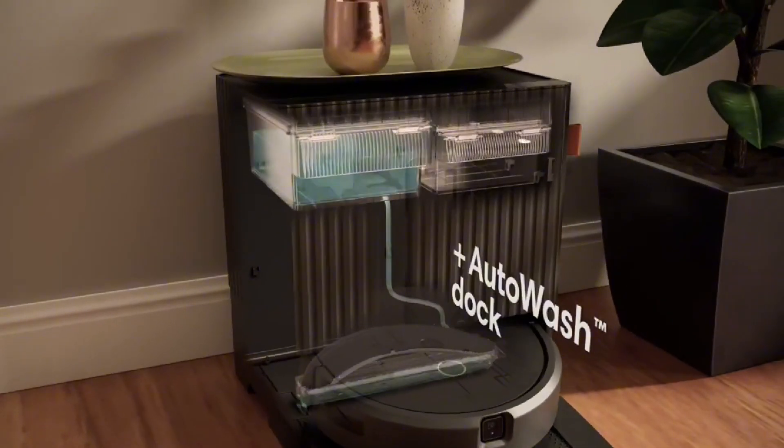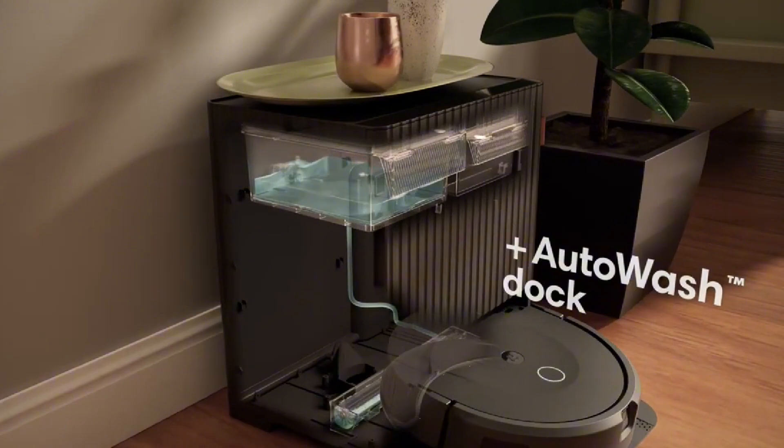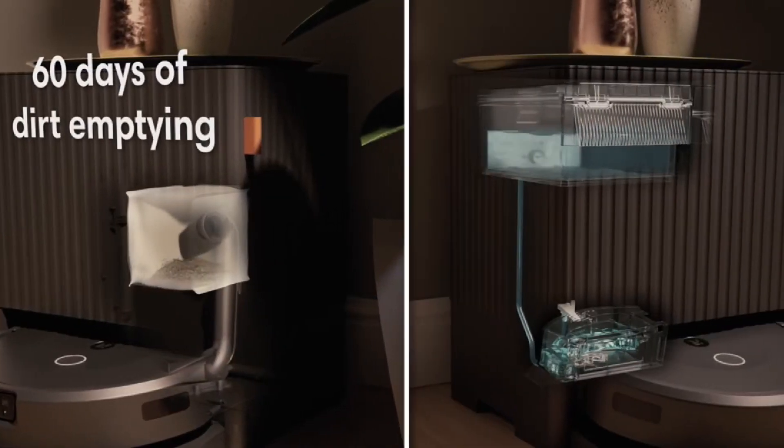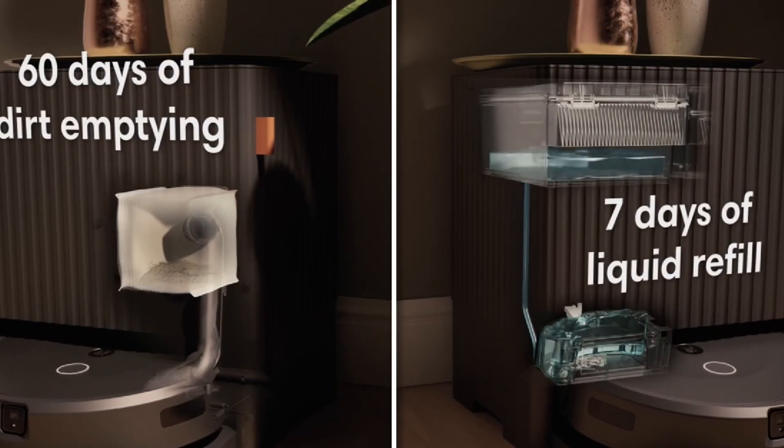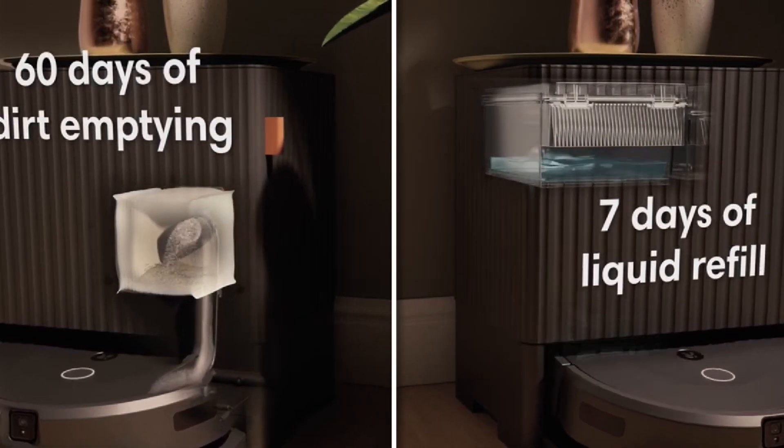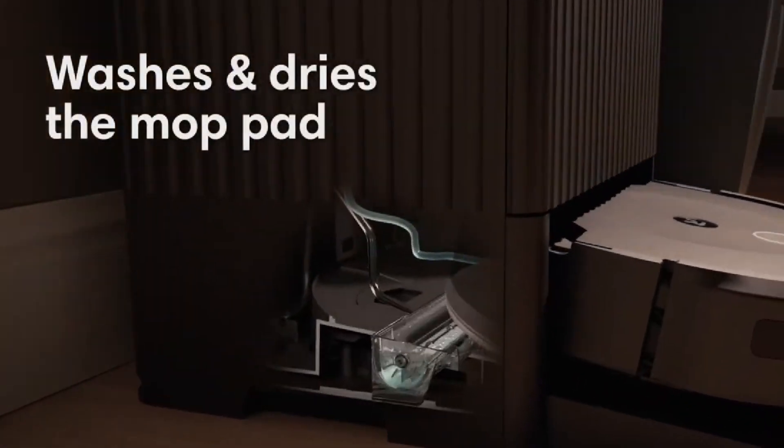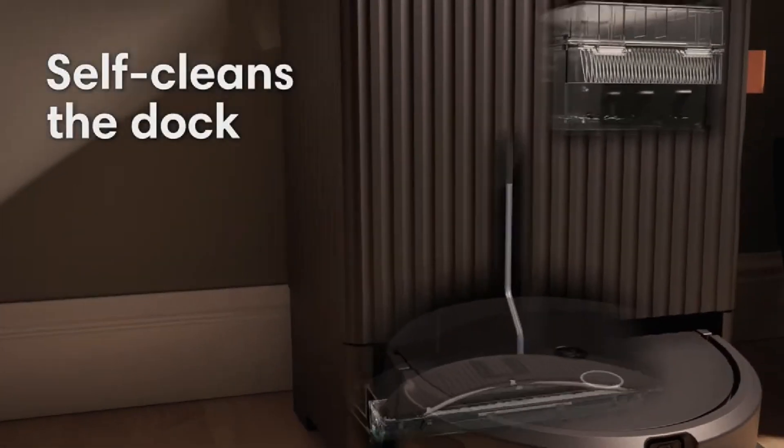A standout feature of the Roomba 10 is its self-emptying base, which allows it to empty its dustbin into a larger container automatically, reducing maintenance tasks significantly. This feature is especially beneficial for busy households as it minimizes the frequency of manual emptying. In contrast, the D-Bot T30 requires more hands-on maintenance, as it does not have a self-emptying option.